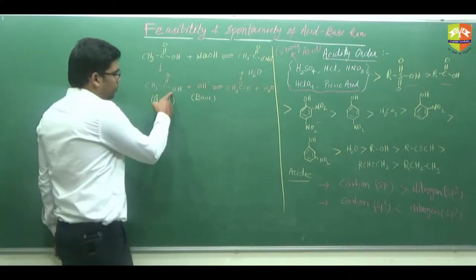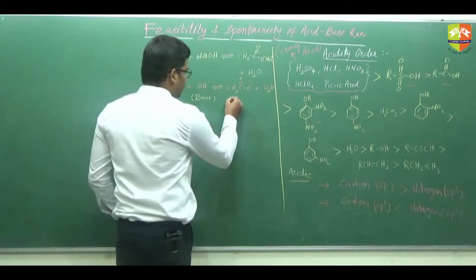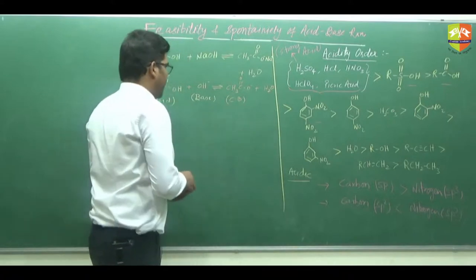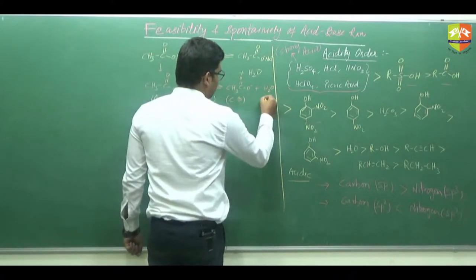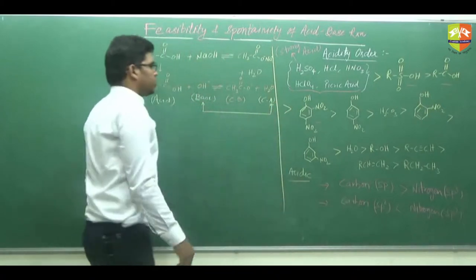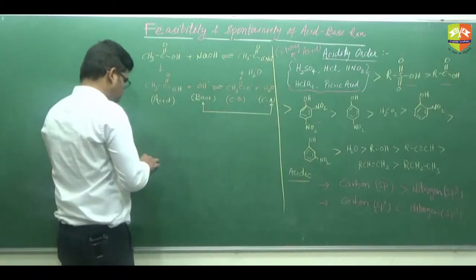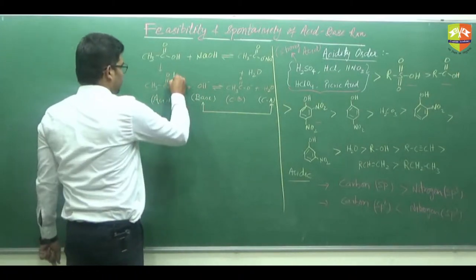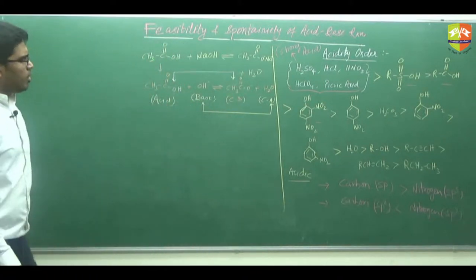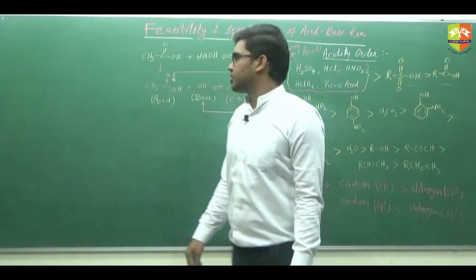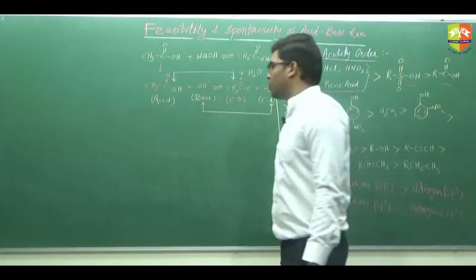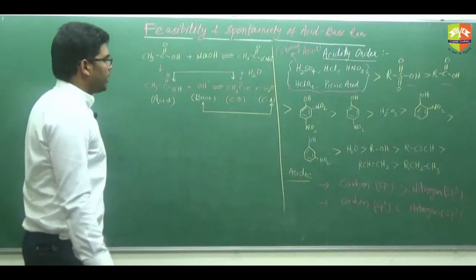Now, when this acid loses H⁺ ion, it forms the conjugate base, and the base forms the conjugate acid. So this is what a conjugate acid-base pair is. We are not concerned with the conjugate acid and conjugate base individually — we are concerned with the acid on both sides or the base on both sides.